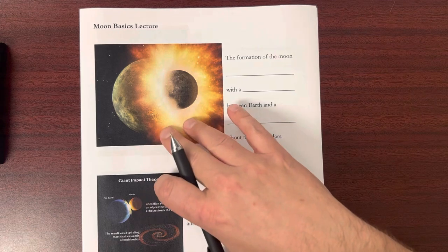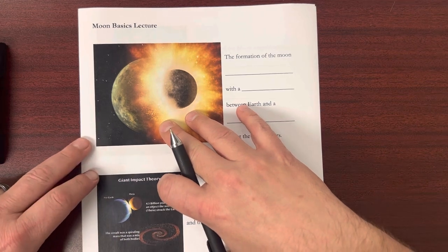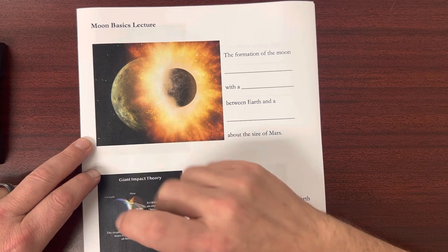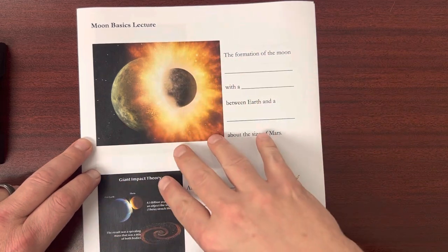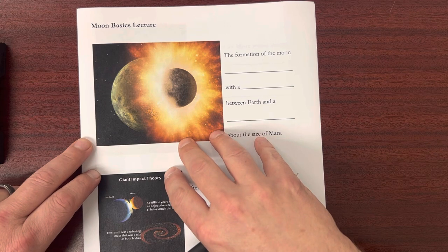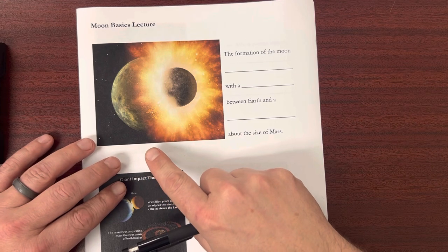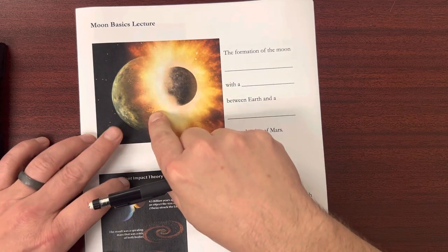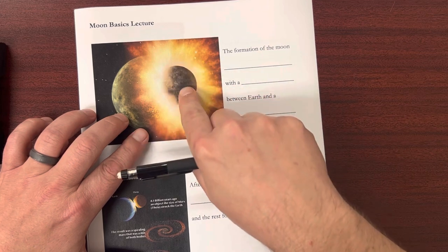So when we see this first image here, what we're seeing is a representation of the formation of the moon. Very early on in the Earth's history, there was a lot of stuff flying around the solar system. And as the Earth was forming, there were things that were colliding with it. And at some point, we had an Earth-size object get impacted by about a Mars-size object.